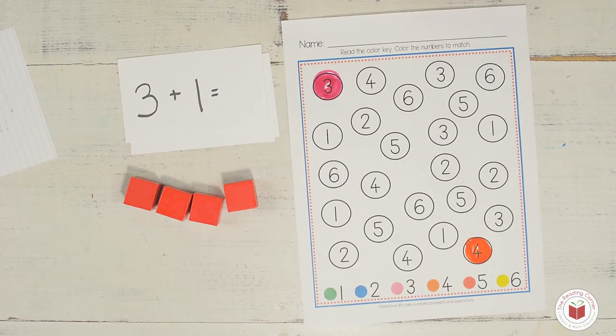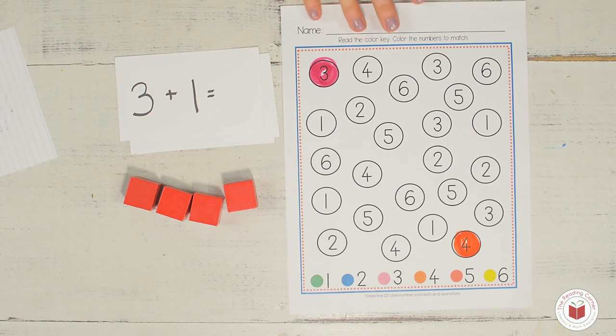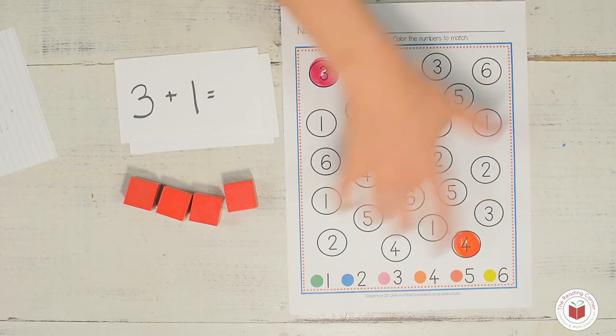Now it's your turn to use your addition cards and finish your task map by using the addition cards to color all the numbers.